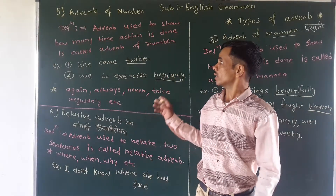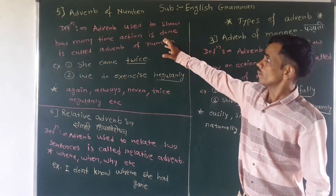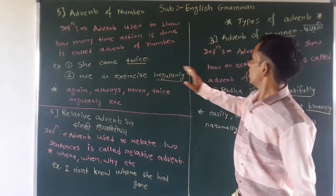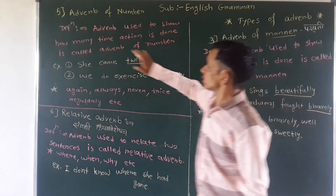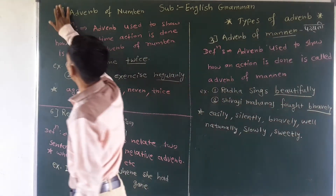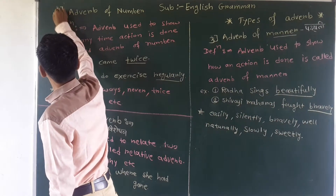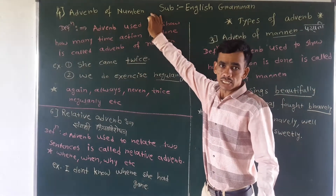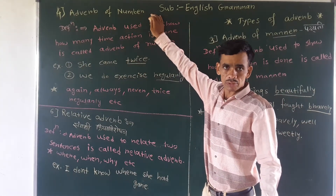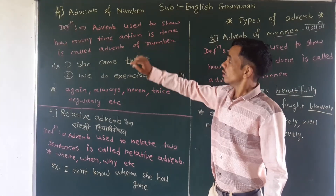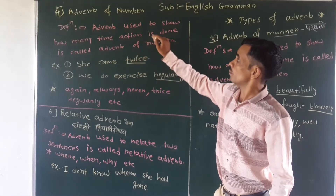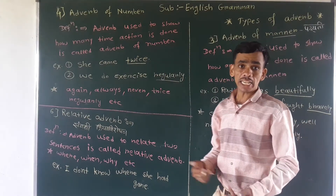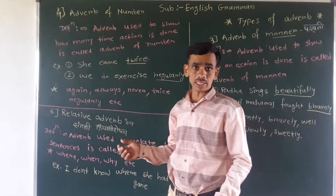Now we are going to see our next type, adverb of number, which is number four. Adverb of number — number means sankhya darshan kriya. Adverb which is used to show how many times an action is done.